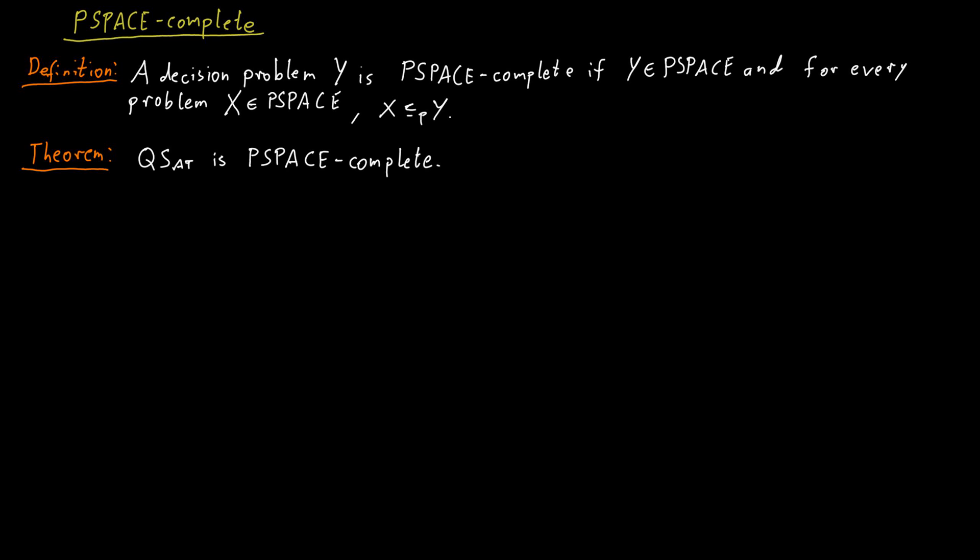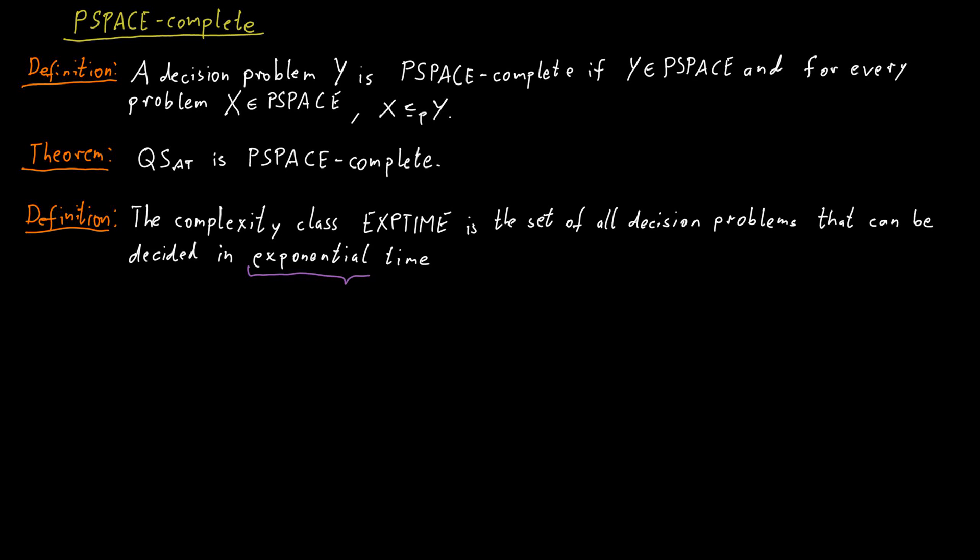This is a good opportunity to introduce a new complexity class as well, called EXP-time. The complexity class P contains decision problems which are solvable in polynomial time. The complexity class EXP-time contains all the decision problems which are solvable in exponential time. So say the size of the input is n, then we allow a running time of the form 2 to the power of some polynomial function in n.